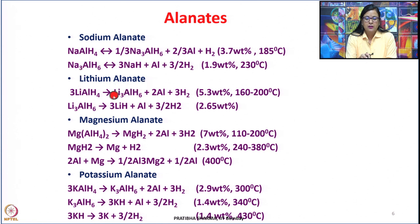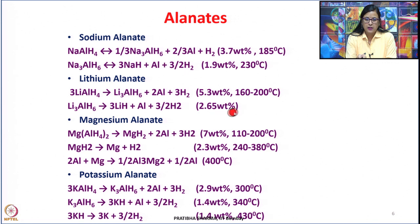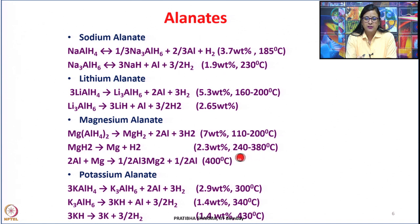Another example is lithium alanate: 3LiAlH4 can give Li3AlH6 plus 2Al plus 3H2, occurring at 160 to 200 degrees centigrade releasing 5.3 weight percent of hydrogen. Li3AlH6 can further give 3/2 H2 — 2.65 weight percent — at a further higher temperature. Similarly, magnesium alanate Mg(AlH4)2 forms magnesium hydride at 110 to 200 degrees centigrade giving 7 weight percent.